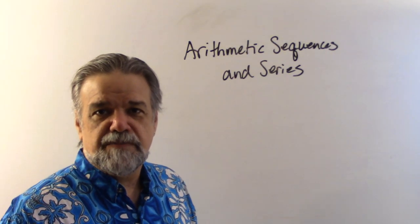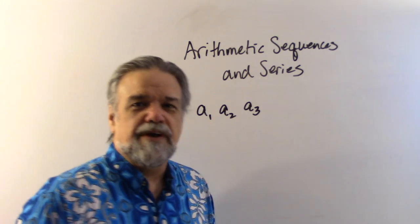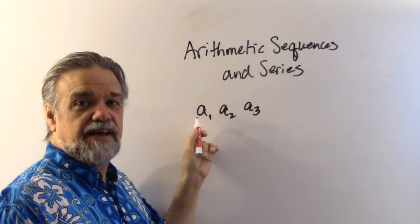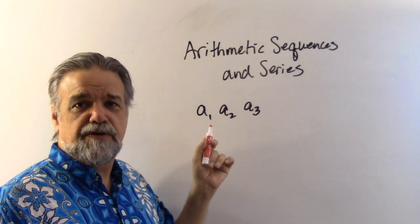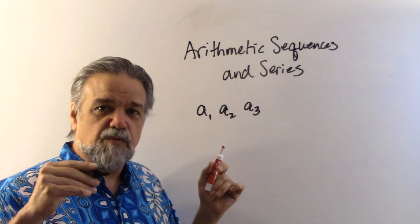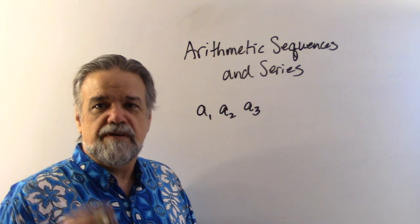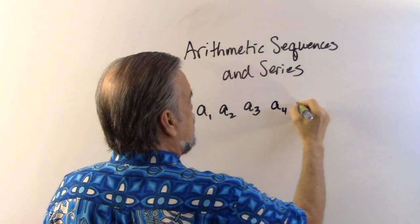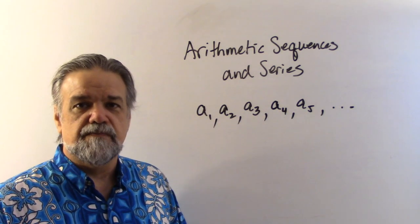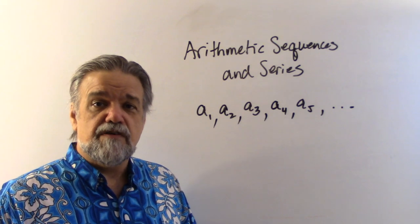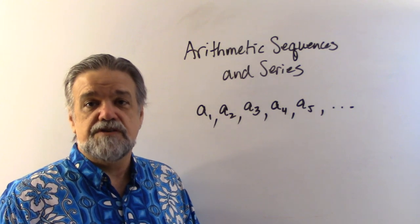Now, you may be thinking to yourself, dummy, he doesn't know how to pronounce arithmetic. Actually, I do. This word is pronounced arithmetic when it's a noun, and arithmetic when it's an adjective talking about sequences and series. So that is actually the way you pronounce it. But anyway, let's talk about what the thing actually is. So first off, let's talk about the sequence. We have a one, a two, a three.